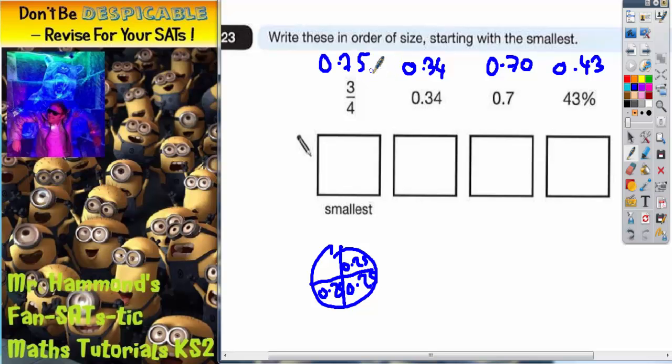So all we've got to do now is put them in the correct order of size. The smallest one is 0.34, so that goes in first. Next smallest is 0.43, which comes from 43 percent, so we need to write the original thing, which was 43 percent. Then we've got 0.70, which comes from 0.7. Finally, we've got 0.75, which comes from three quarters.